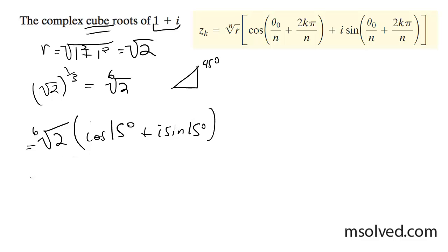And then for our second solution, it's going to be equal to, so it's 360 divided by 3, which is 120, so it's going to be cosine of 135.